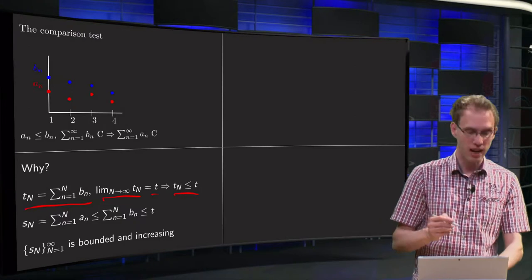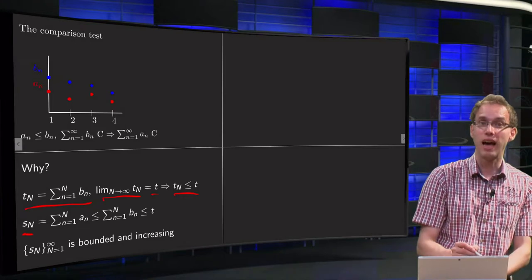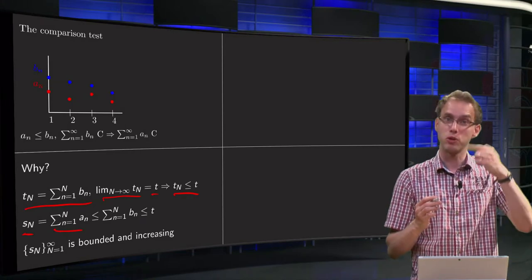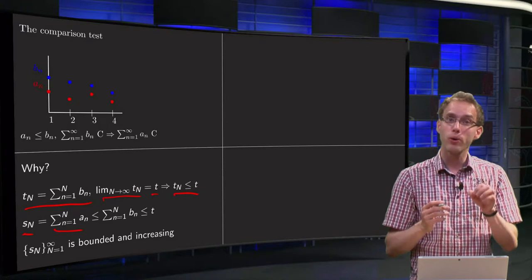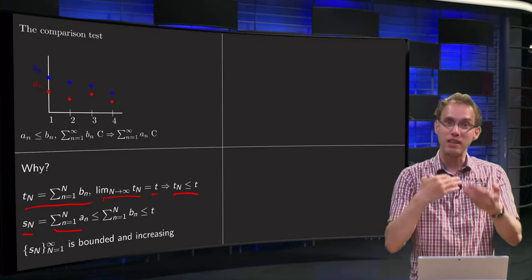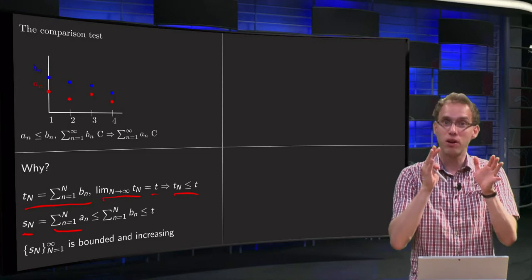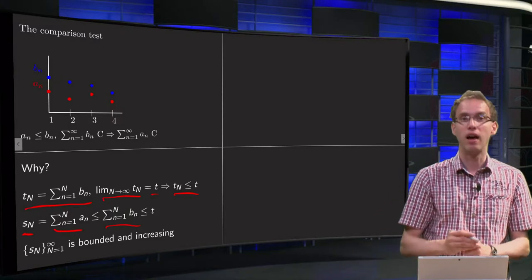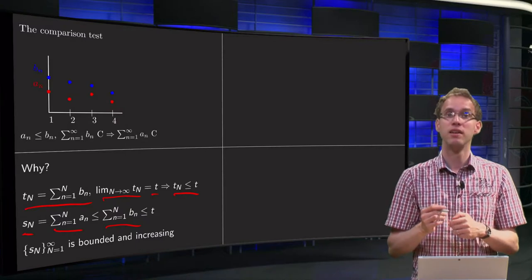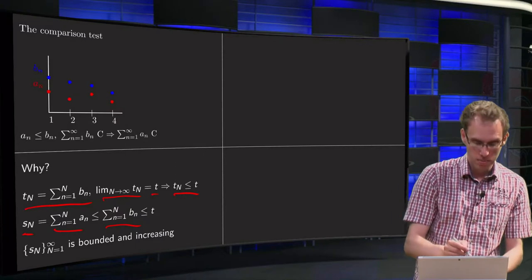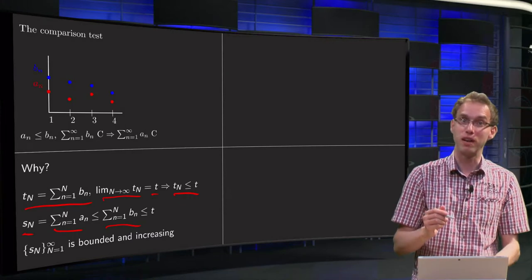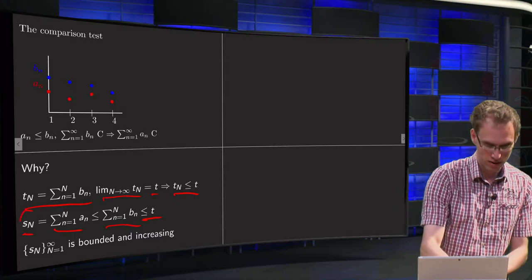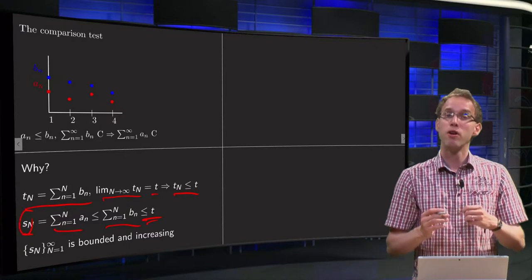Now let us take a look at the An. We define the S capital N in the usual way as the sum from small n equals 1 to capital N of the An. Now we know that all those An are smaller than the Bn, so if you add them up, if you add the first capital N up, the sum of those first N terms will also be smaller than the first capital N terms of the Bn. And that has got a name: the sum of the first capital N terms of the Bn was the Tn and those were smaller than T, so the S capital N over here is smaller than or equal to T.